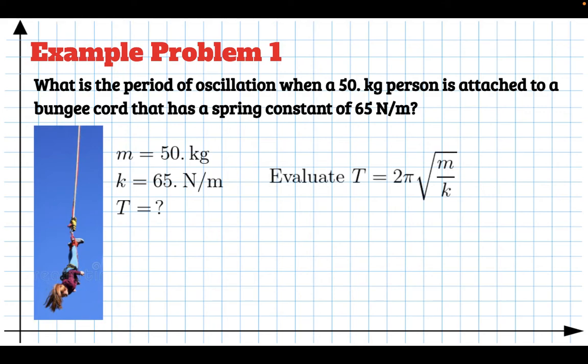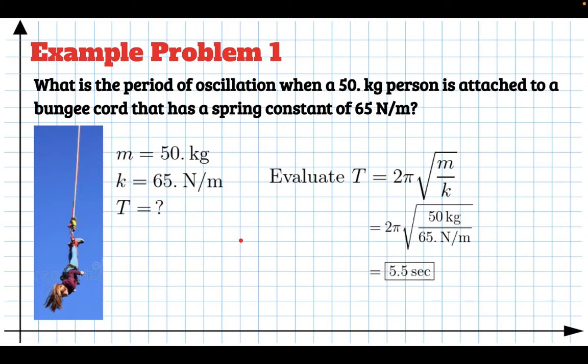So we will simply evaluate the equation T = 2π√(m/k). Plug in our values, run it through your calculator, and you get 5.5 seconds. So it takes 5.5 seconds for this person to go from the bottom all the way back up and then back down on their bounce. Now bungee cords are kind of complicated because sometimes you're swinging back and forth this way too. But that's how long it would take you to go up and down, your oscillation up and down.